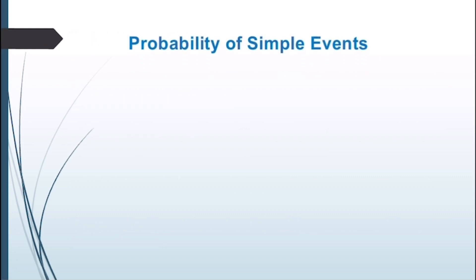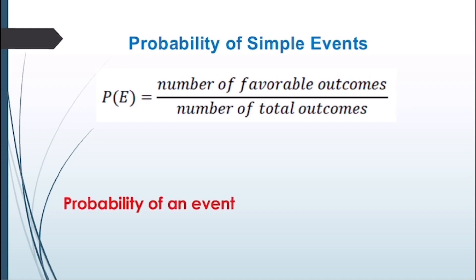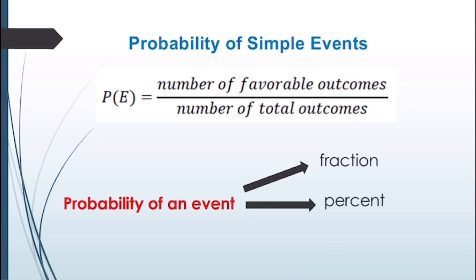The probability of simple events is finding the probability of a single event occurring. When finding the probability of an event occurring, we use the formula: Probability of an event equals the number of favorable outcomes divided by the number of total outcomes. Take note that the answer must be expressed in simplest form. The probability of an event can be expressed as a fraction, percent, or decimal.